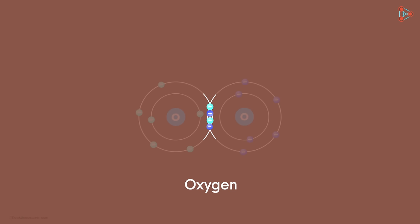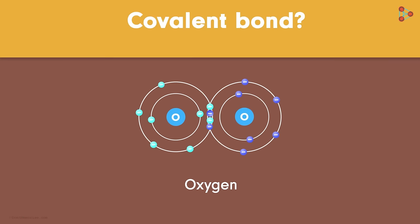That means both the oxygen atoms contribute two electrons each, thus giving two pairs of electrons in the bond formation. So is this not an example of covalent bond? Well, it is. But covalent bond has one pair of electrons being shared, right?